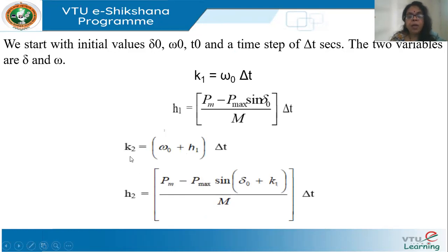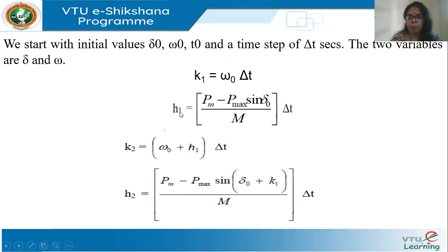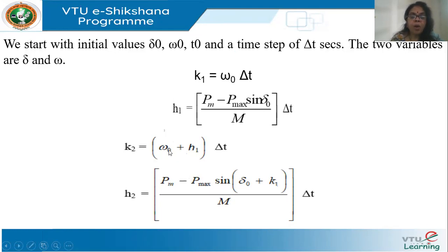Next, k2 = (omega-0 + h1/2) * delta-t — updating y with h1/2. And h2 = (Pm - Pmax * sin(delta-0 + k1/2)) / M * delta-t — replacing delta-0 with delta-0 + k1/2. Remember: omega is y and delta is x, so y is updated with y0 + h1 and x is updated with x0 + k1. These four coefficients are calculated from the initial values delta-0 and omega-0.